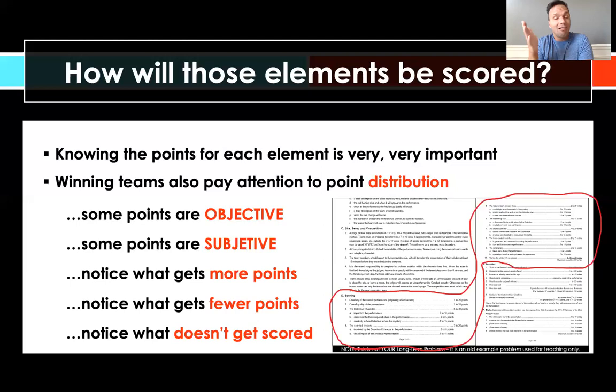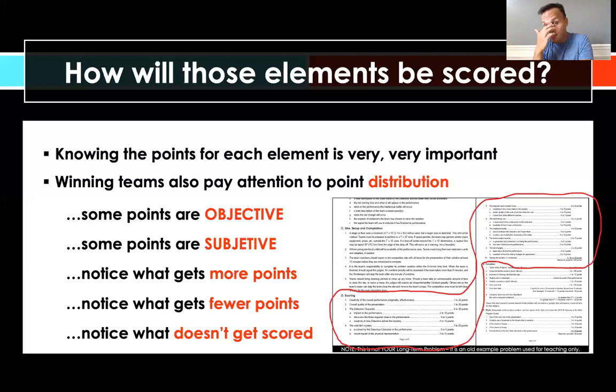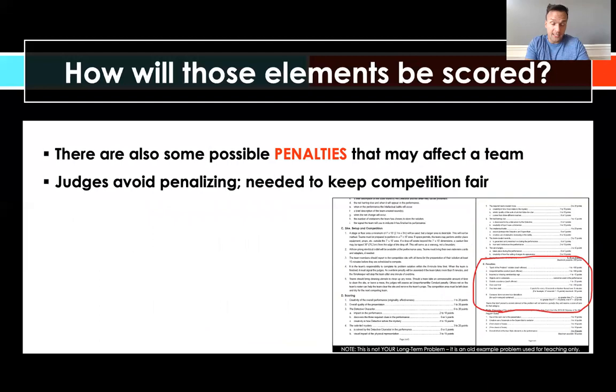Here's an anecdotal example: I once spent two hours painting a birdcage for a classics problem called Vaudeville, and it turned out that birdcage was getting zero points in our solution - a total waste of time. I realized I should have been spending more time on the costume, which was getting points, rather than a random prop getting zero. It looked lovely, but it didn't advance our solution. That's how Odyssey teaches us to think about allocation of resources and scoring.